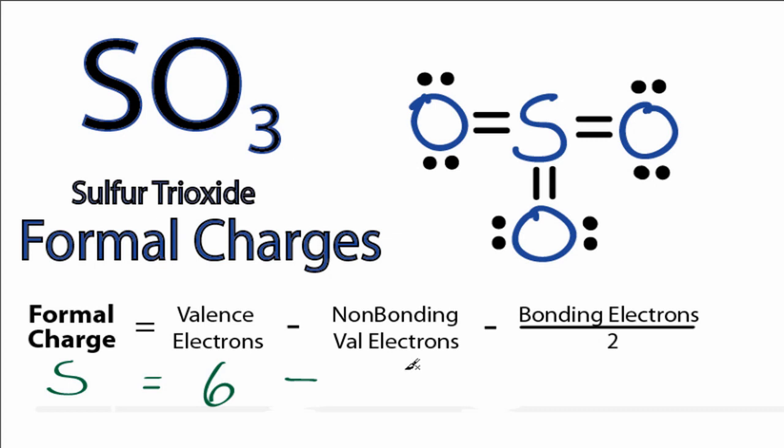We'll subtract the non-bonding valence electrons. All the electrons around the sulfur are involved in those double bonds, so there are no non-bonding valence electrons. In bonding, we have three double bonds, so we have a total of 12 valence electrons, bonding valence electrons, which we'll divide by two. Six minus zero minus six equals zero, so the formal charge on sulfur is zero.